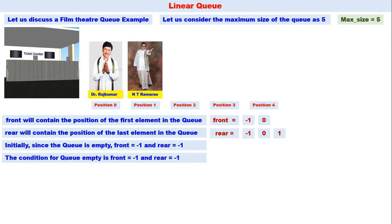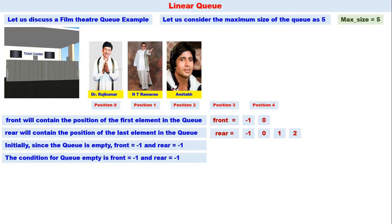Another big personality comes to stand in the queue. We increment rear, so rear becomes two. That is Amitabh Bachchanji, superstar of the Hindi film industry. Dr. Rajkumar remains the first person in the queue and Amitabh Bachchanji is the last person. Therefore, front equals zero and rear equals two.